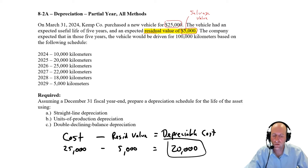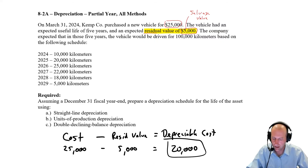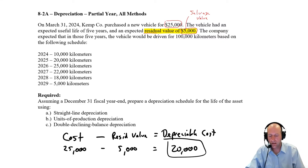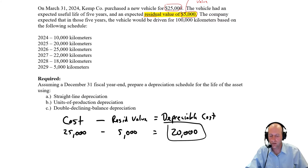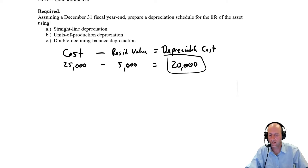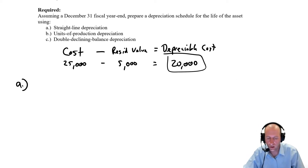The company expected that in those five years, the vehicle would be driven for 100,000 kilometers, based on a provided schedule. Assuming a December 31st year-end, we need to prepare a depreciation schedule for the life of the asset using the straight line method. So let's do our straight line schedule.